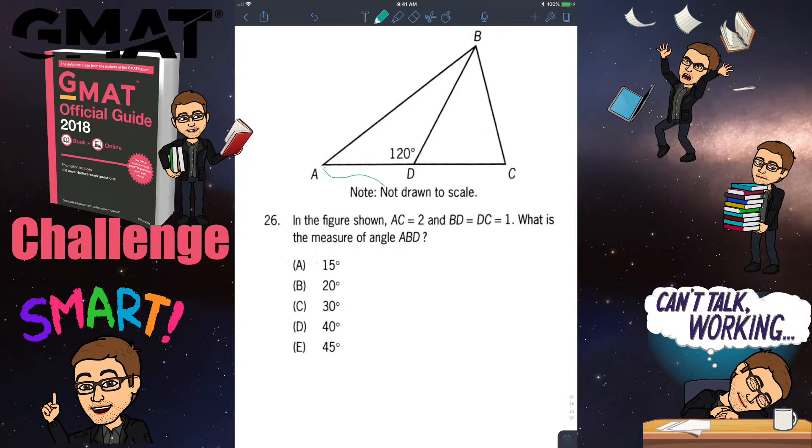First, AC equals 2, so from A to C it's 2. BD and DC is 1, so BD is 1, DC is 1. That basically tells you that these two line segments are equal, even though it doesn't look like it in the diagram. That's why there is a note: not drawn to scale. And it's asking the measure of angle ABD, so mark angle ABD. You could put a question mark over there.